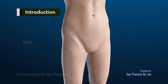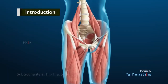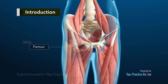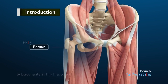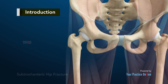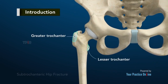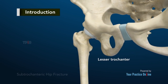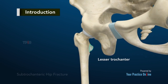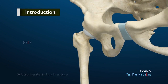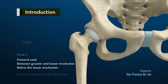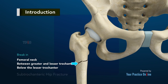A hip fracture is a break that occurs near the hip in the upper part of the femur or thigh bone. The thigh bone has two bony processes on the upper part: the greater and lesser trochanters. The lesser trochanter projects from the base of the femoral neck on the back of the thigh bone. Hip fractures can occur either due to a break in the femoral neck, in the area between the greater and lesser trochanter, or below the lesser trochanter.